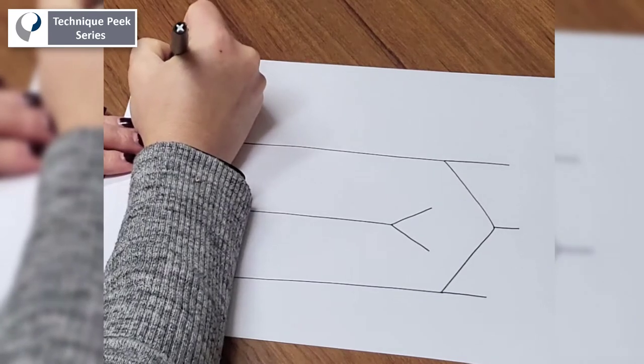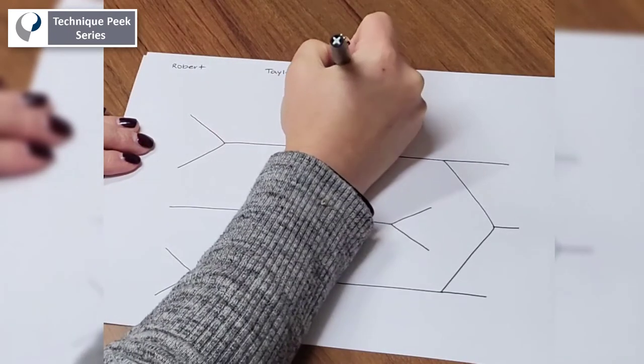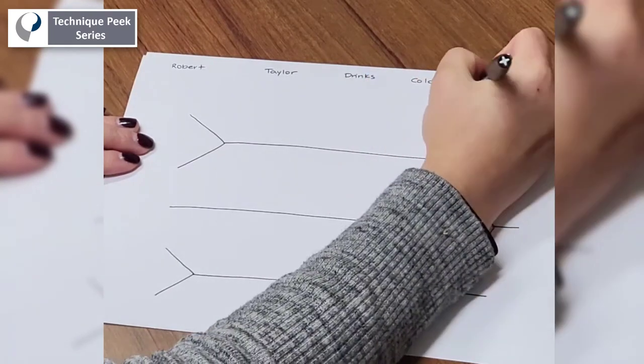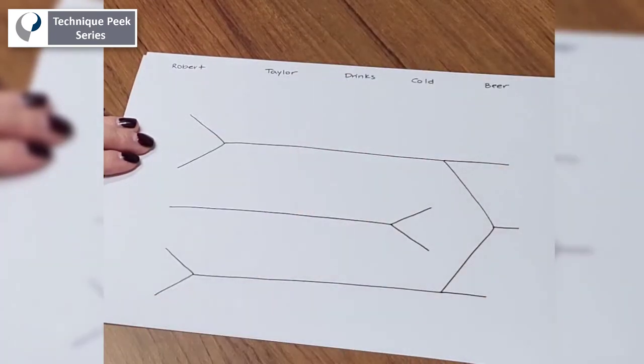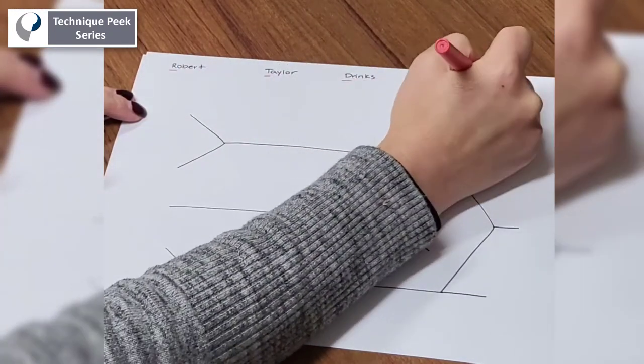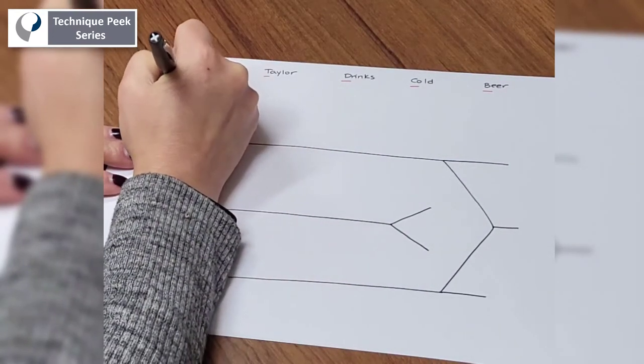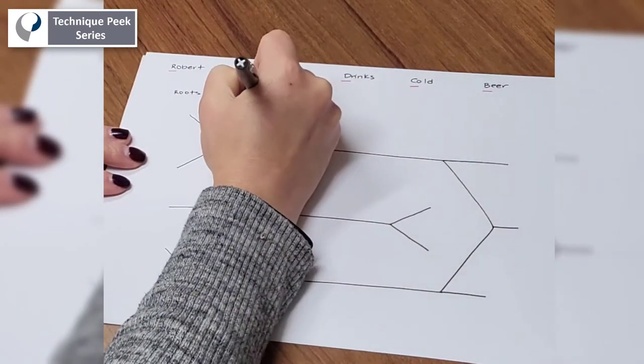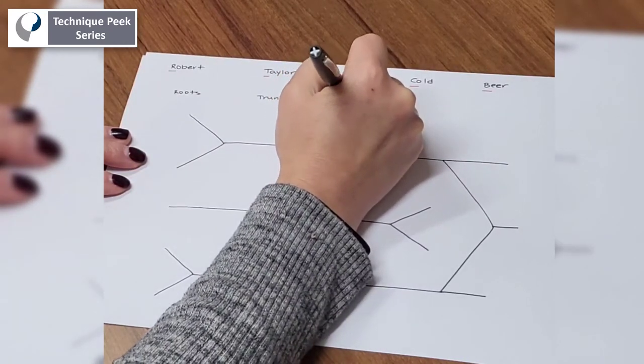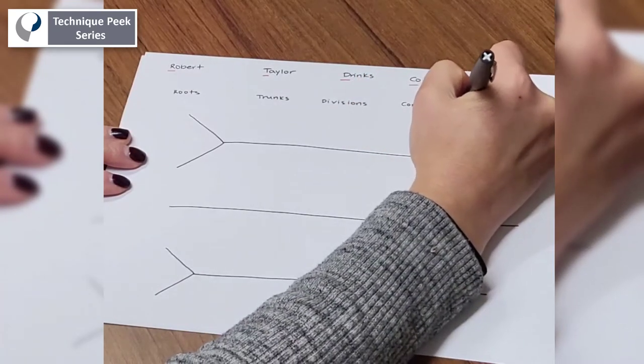The mnemonic is Robert Taylor drinks cold beer. So here we're going to use the first letters of each of these words to help us divide the brachial plexus. So the R is for roots, the T is for trunks, the D is for divisions, the C is for cords, and finally the B is for branches.